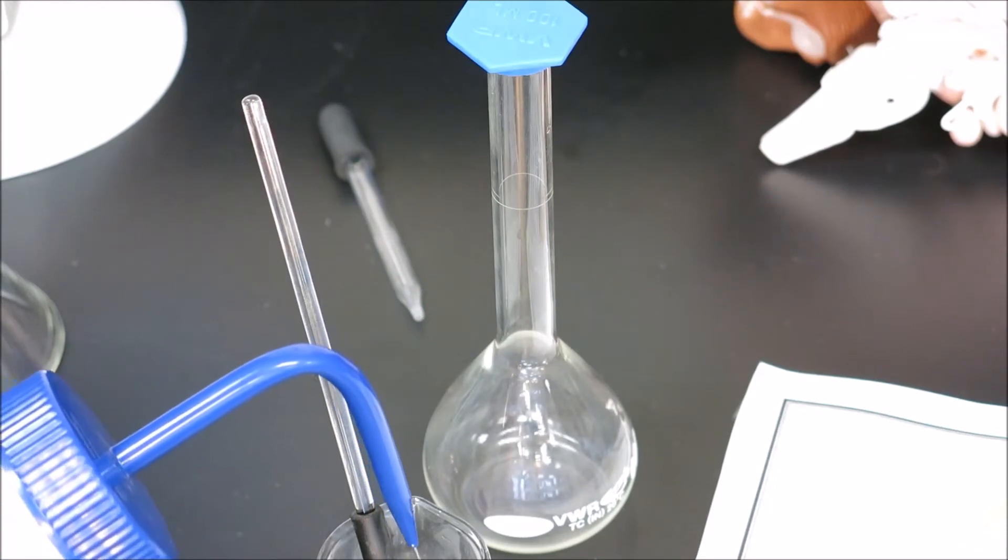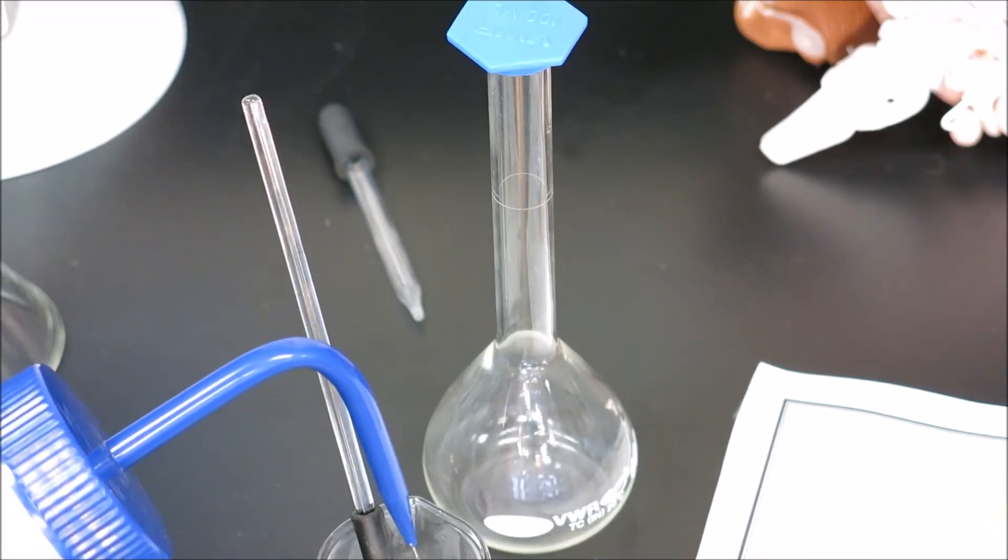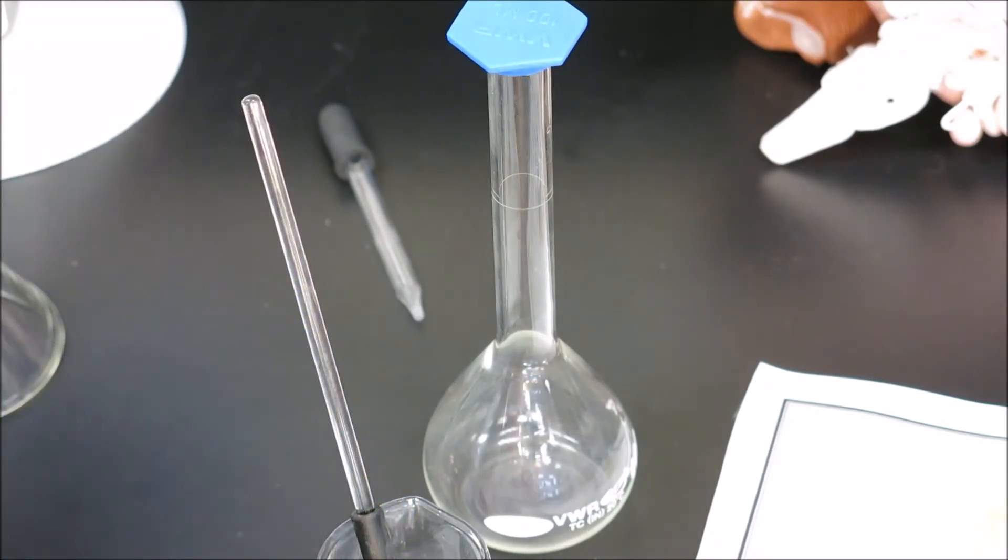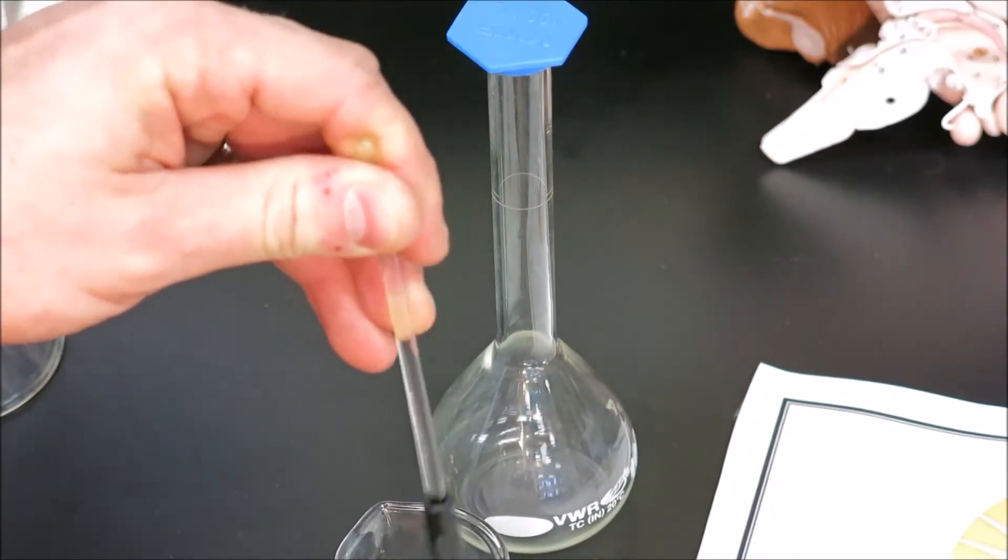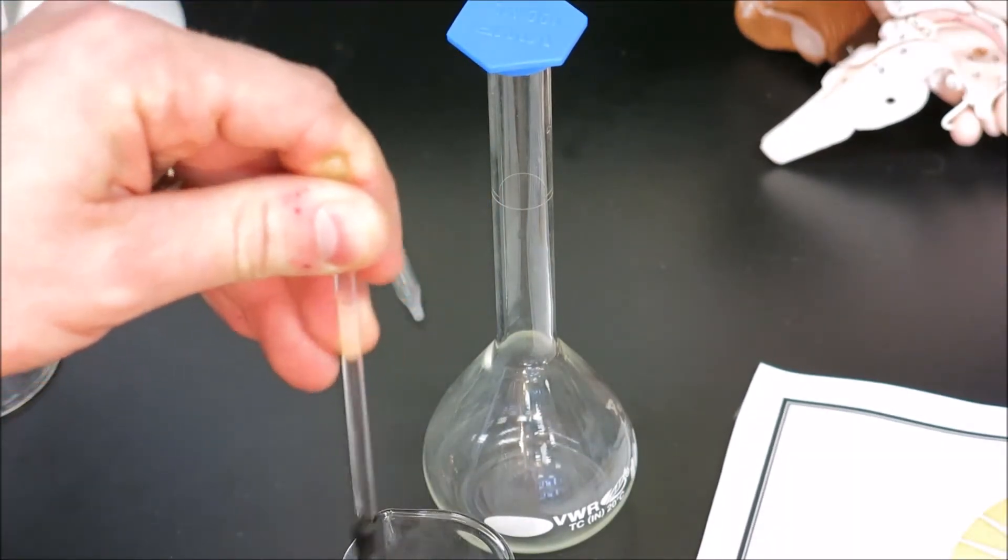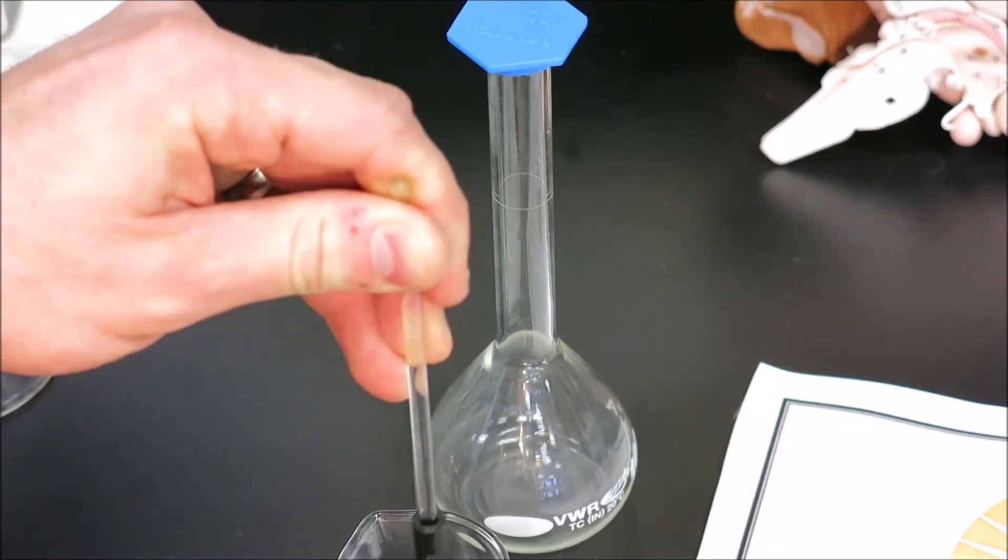The key is not to add too much water because our volumetric flask is 100 milliliters. A general rule of thumb is to use 15 to 20% of the flask volume as the initial dissolved amount.